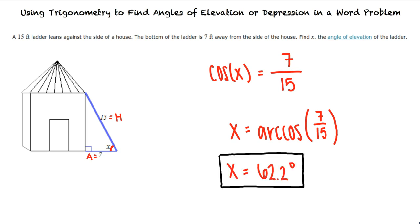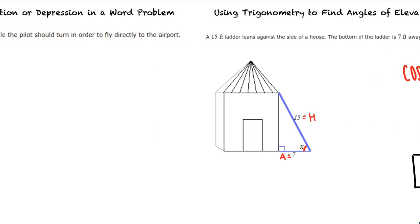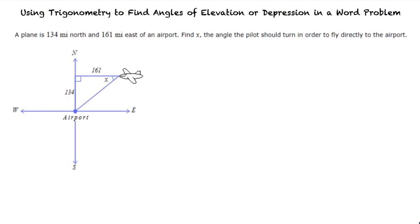Let's try one more example problem. A plane is 134 miles north and 161 miles east of an airport. Find x, which is the angle the pilot should turn in order to fly directly to the airport.